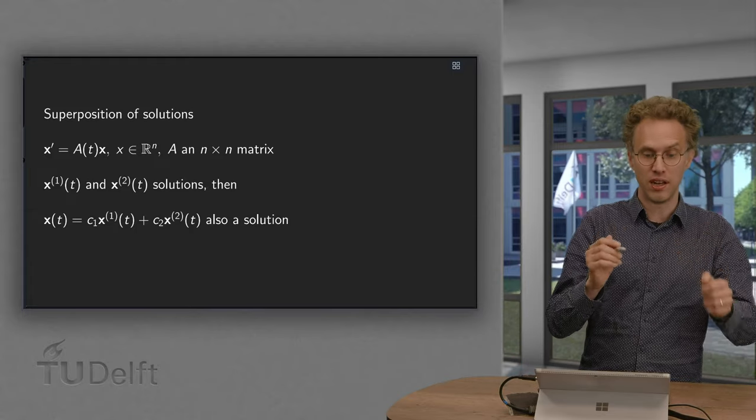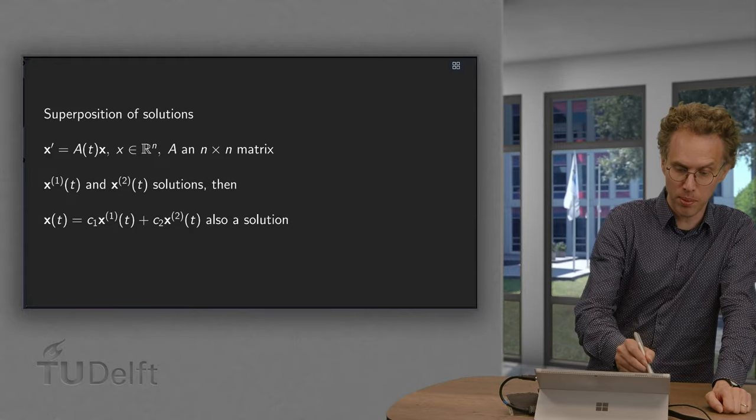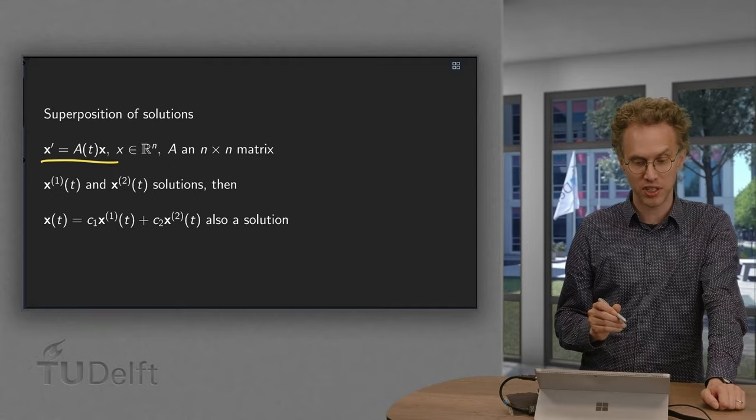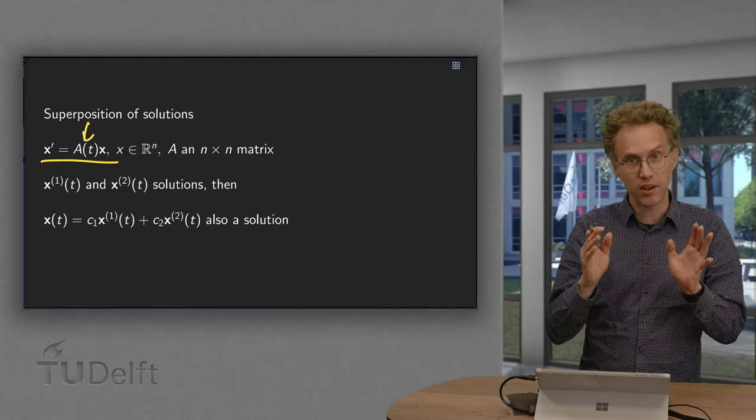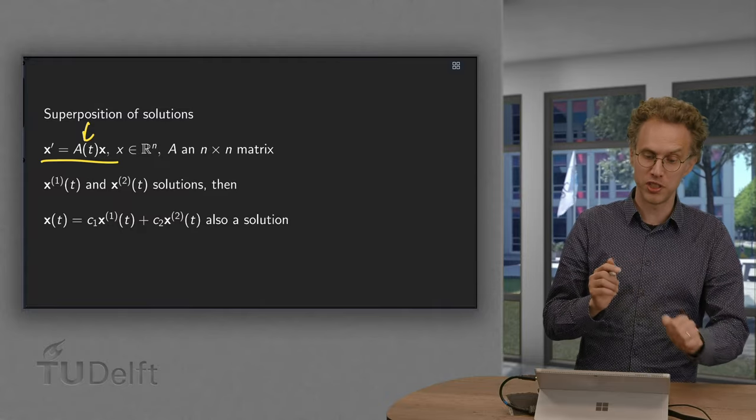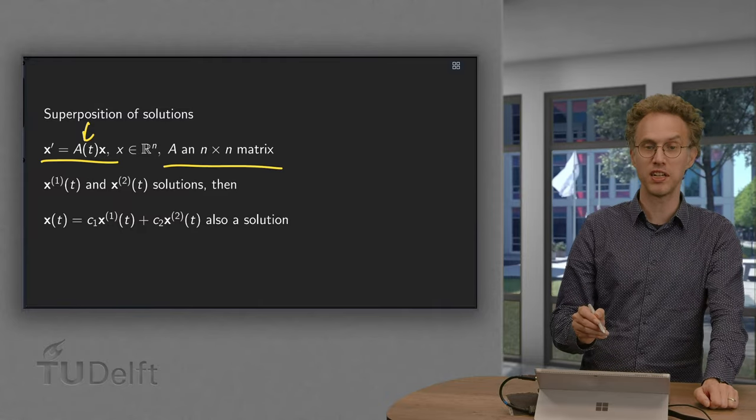So we look at a linear and homogeneous problem. x' equals A(t) times x, and no other terms. We are homogeneous. So A is an n times n matrix.